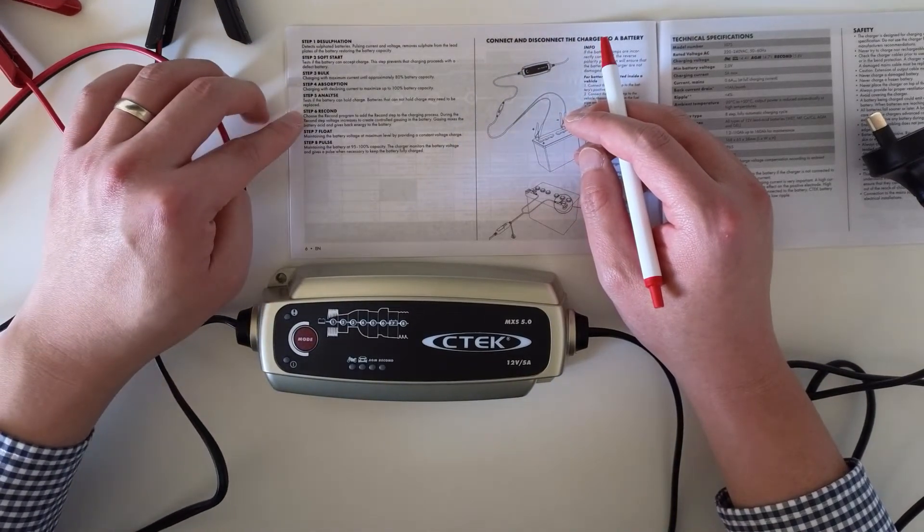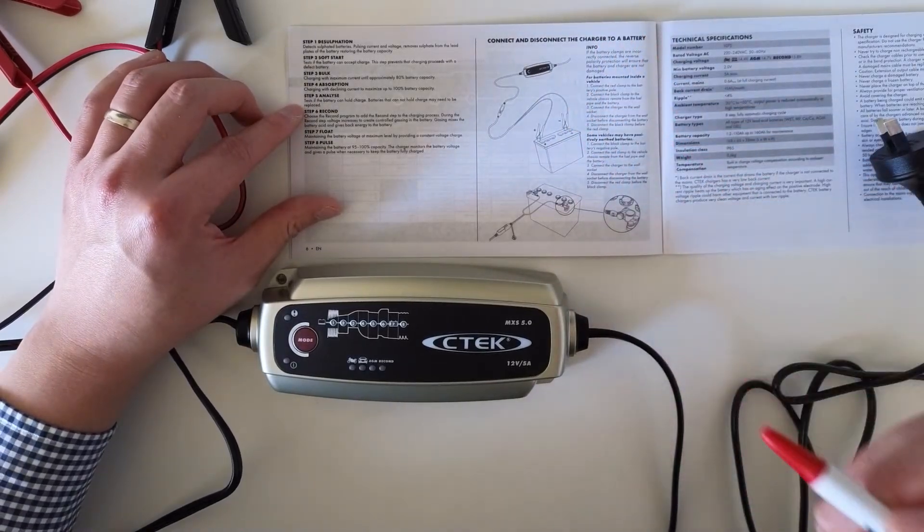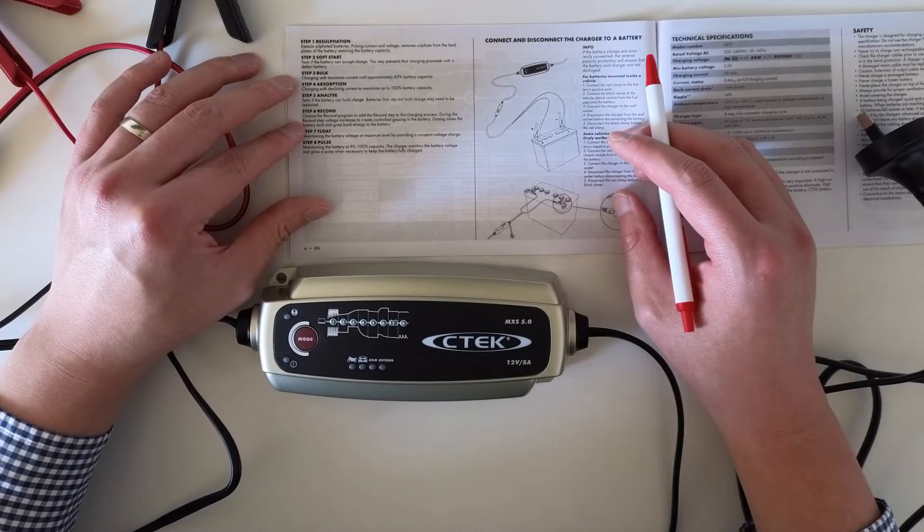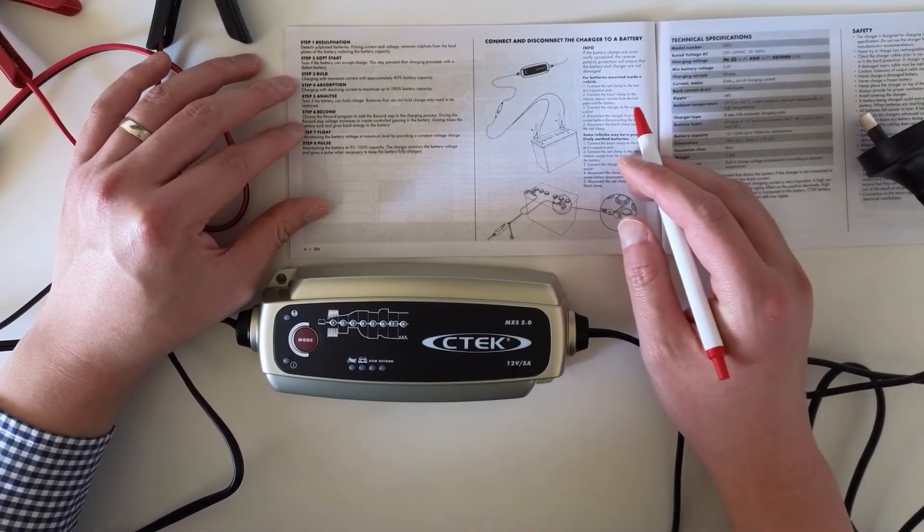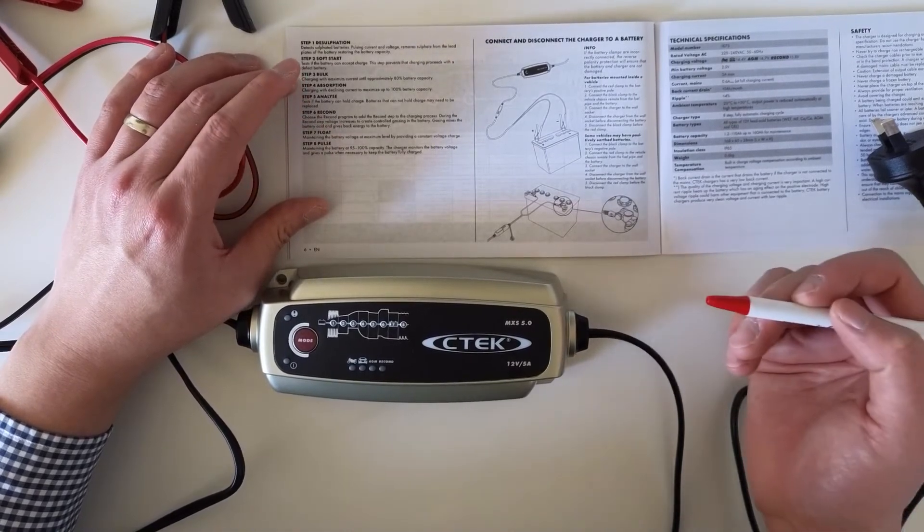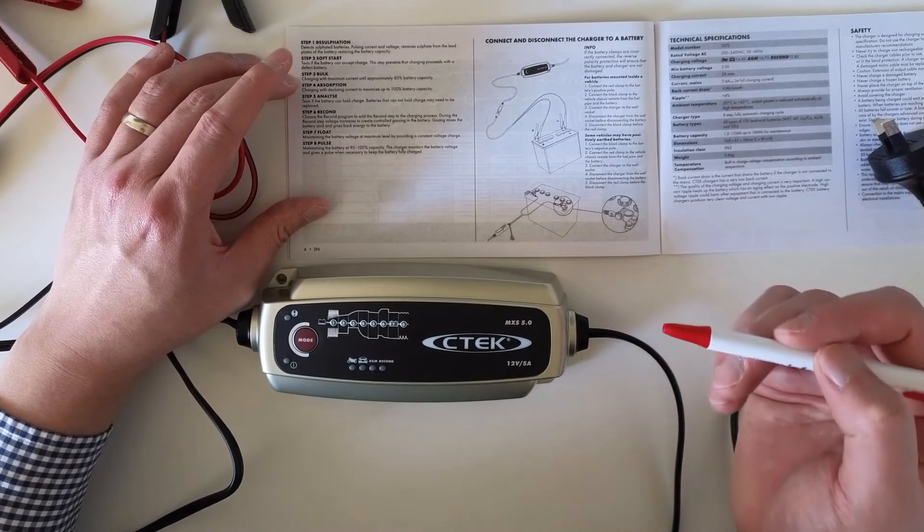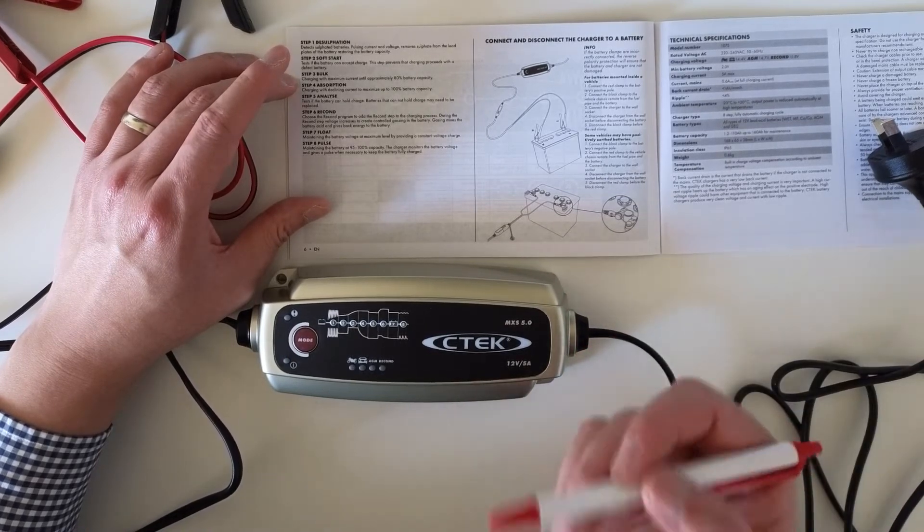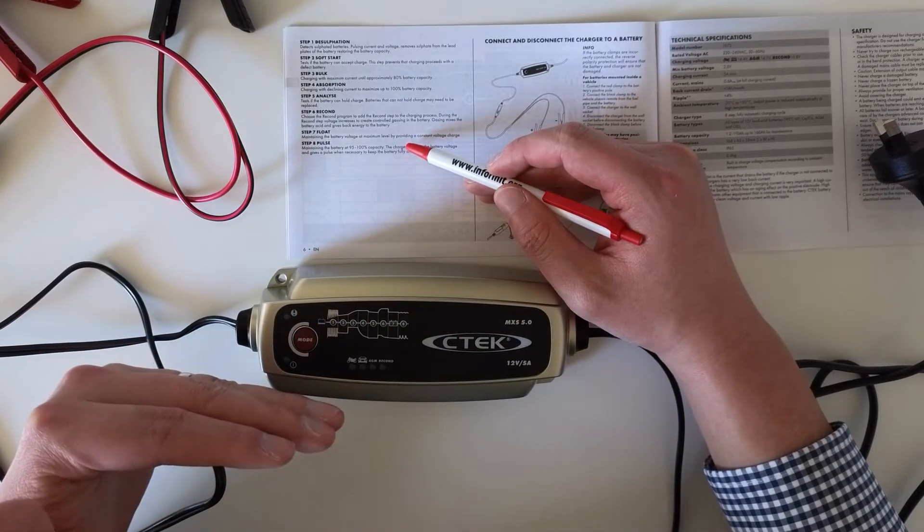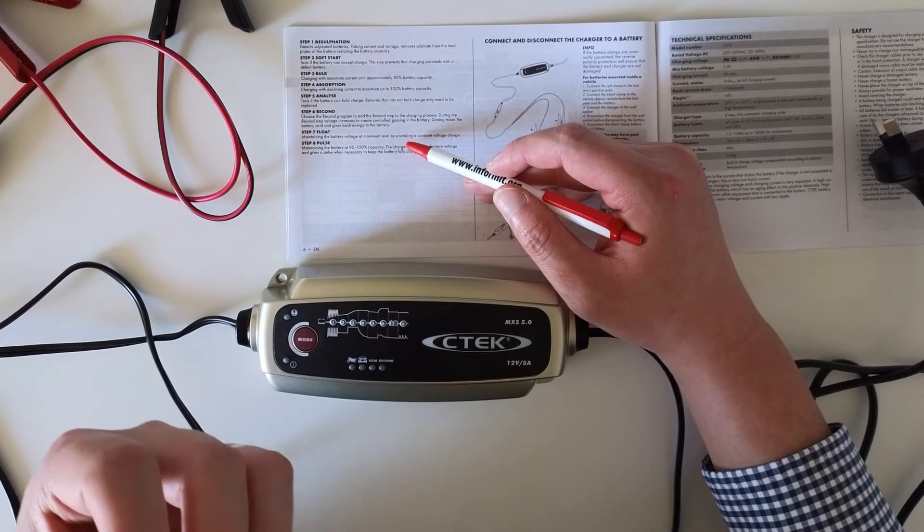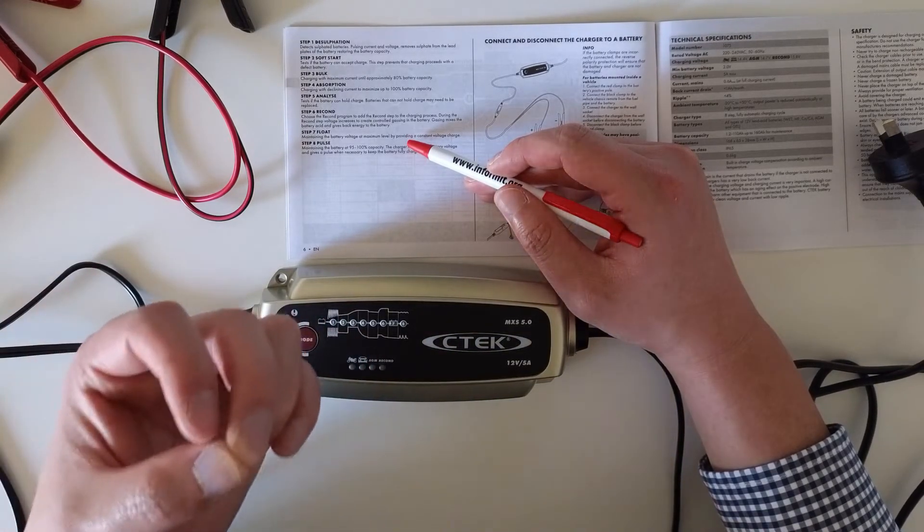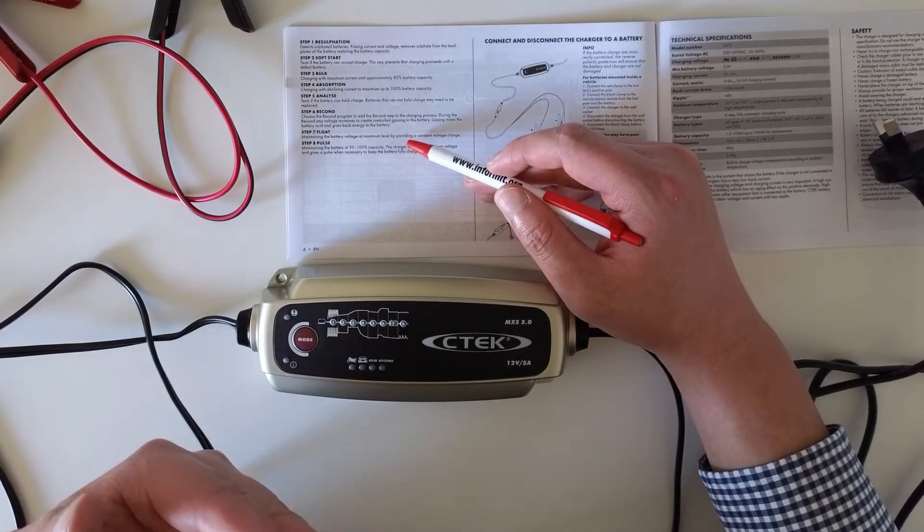Step six is the second attempt I did. It reconditions the battery. What it means by reconditioning is that the recondition step increases voltage to create controlled gassing in the battery. Gassing mixes the battery acid and gives back the energy to the battery. This one tries to increase the voltage, and by doing so it creates some gas inside the battery, and that mixture of gas and acid will give back the capacity of the battery.